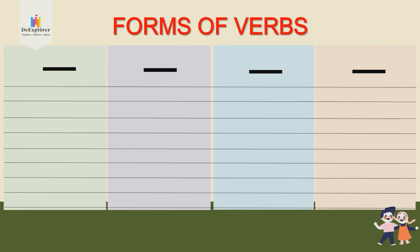Forms of verbs. Please listen to me first before you start writing. As you remember, I've told you that a verb — Dongshi — has different forms. It can be in the present, past, present participle, or the past participle form. Now let's take a look at a very simple example: the word 'go'. Present tense: go, goes.